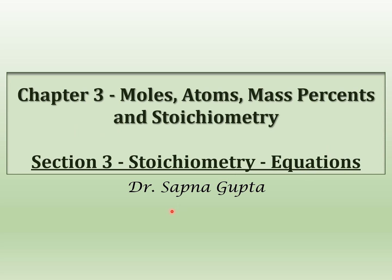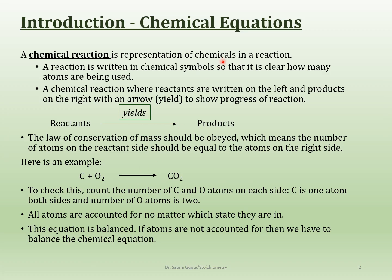This section of chapter 3 is all about equations and writing equations, balancing equations, learning about equations. So what is an equation? A chemical equation is where you have a reactant that gives you products. We indicate that by an arrow. An arrow stands for yield. Reactants yield products.